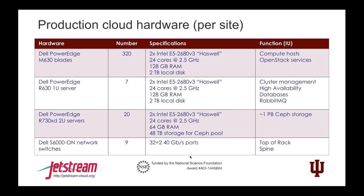At IU storage is about 60% capacity and at TAC about 40%. Usage-wise overall, IU has been sitting at about 70% VM capacity and TAC at about 35%. TAC is less utilized overall, and we're hoping to balance that out. Part of that is because of Wrangler usage skewing things a bit, and a lot of early adopters just settled in at IU. They're starting to look at using both clouds for fault tolerance.